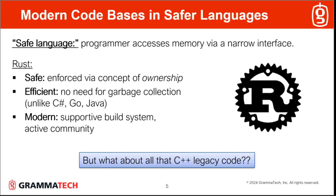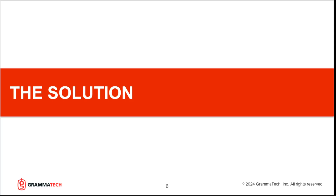Rust achieves memory safety via an access interface known as ownership. At the same time, Rust code has the potential to be highly efficient, something that may be harder, for instance, for garbage collected languages to claim. The question remains then: what to do with all that C++ legacy code?